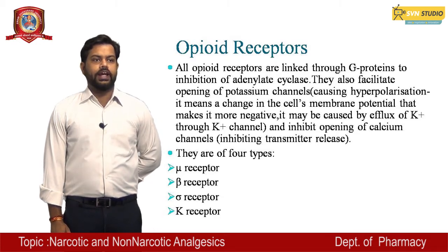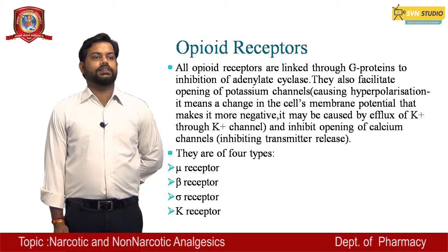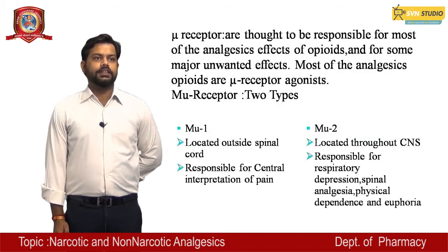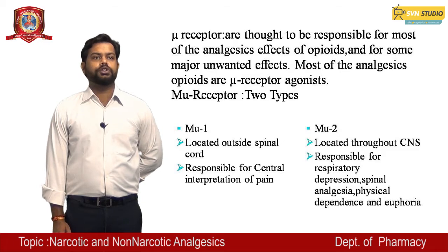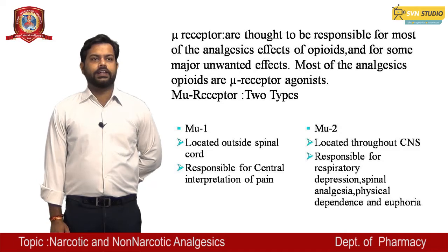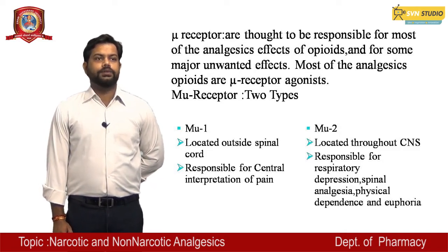Opioid receptors are of four types: mu (alpha) receptor, beta receptor, gamma receptor, and kappa (K) receptors, that is potassium receptors. Mu receptors are thought to be responsible for most of the analgesic effects of opioids and for some unwanted effects. Most of the analgesic opioids are mu receptor agonists.